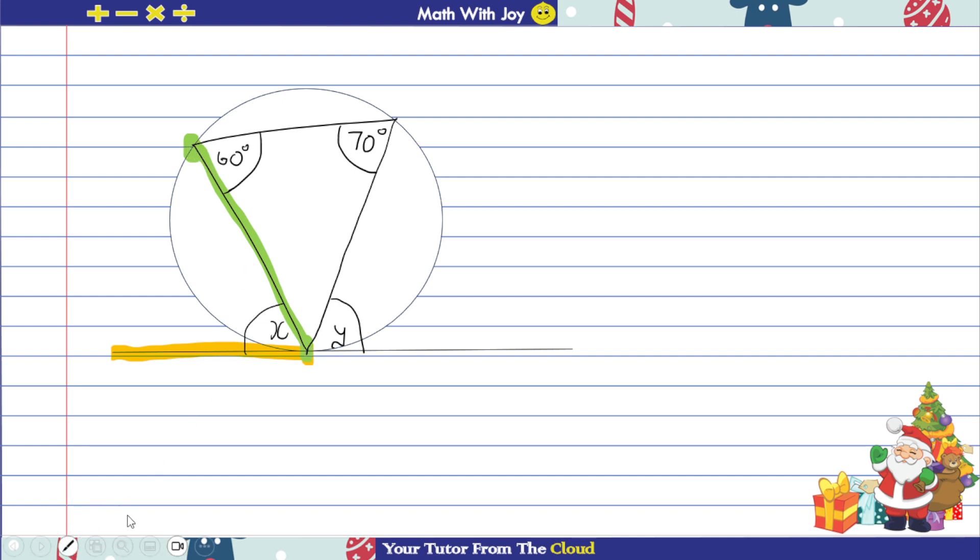So basically what the tangent chord theorem says is that the angle that is formed by the tangent, the orange line, and the chord, the green line - well this angle, in this situation x - that angle will be equal to the angle that the chord subtends at the circumference.